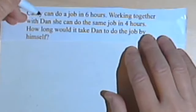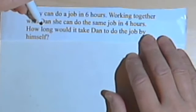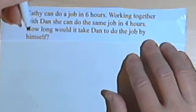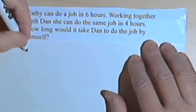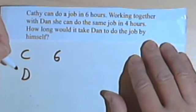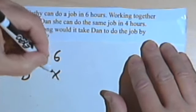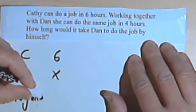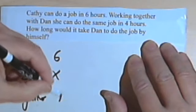Kathy can do a job in six hours. Working together with Dan, she can do the same job in four hours. How long would it take Dan to do the job by himself? Okay, so Kathy is six hours, Dan we don't know Dan's time, we'll call that x hours, and together it takes them four hours.